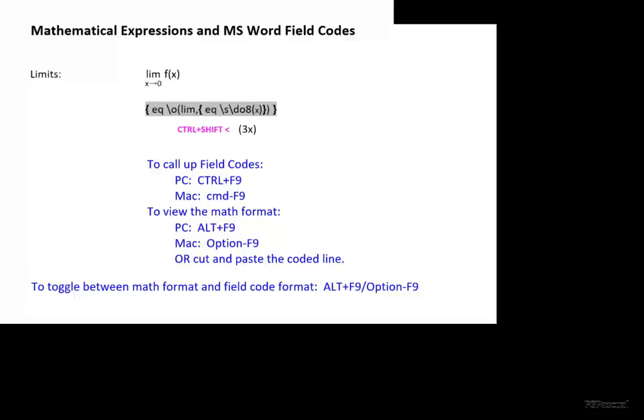We type x. Then we insert the arrow key from the Times Roman font. Then the value to which x is approaching. In this case, let's just say it's zero. Cut and paste.